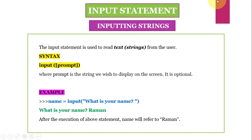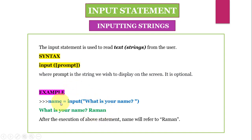Let us understand it with an example. Suppose I have written: name = input("What is your name?"). Here, 'What is your name?' is the prompt. When I press enter, it will display that prompt, and suppose I enter 'Raman'. The input statement will return the string 'Raman', which will be stored in the variable name. So after execution, the variable name will refer to 'Raman'.